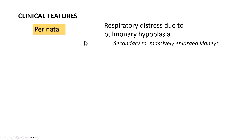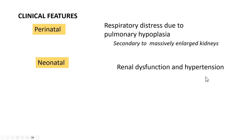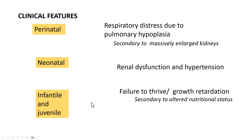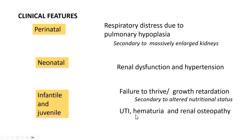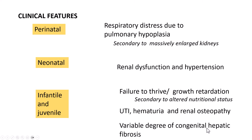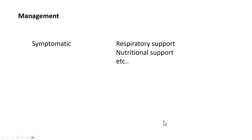Clinically, in the perinatal or neonatal form, massive enlargement of the kidneys can cause the baby to develop respiratory distress due to pulmonary hypoplasia. Renal dysfunction and hypertension are common manifestations in the neonatal period. Management is largely symptomatic — in neonatal and perinatal cases, appropriate respiratory and nutritional support is provided. In older children with hypertension, treatment involves blockers of the renin-angiotensin-aldosterone system.